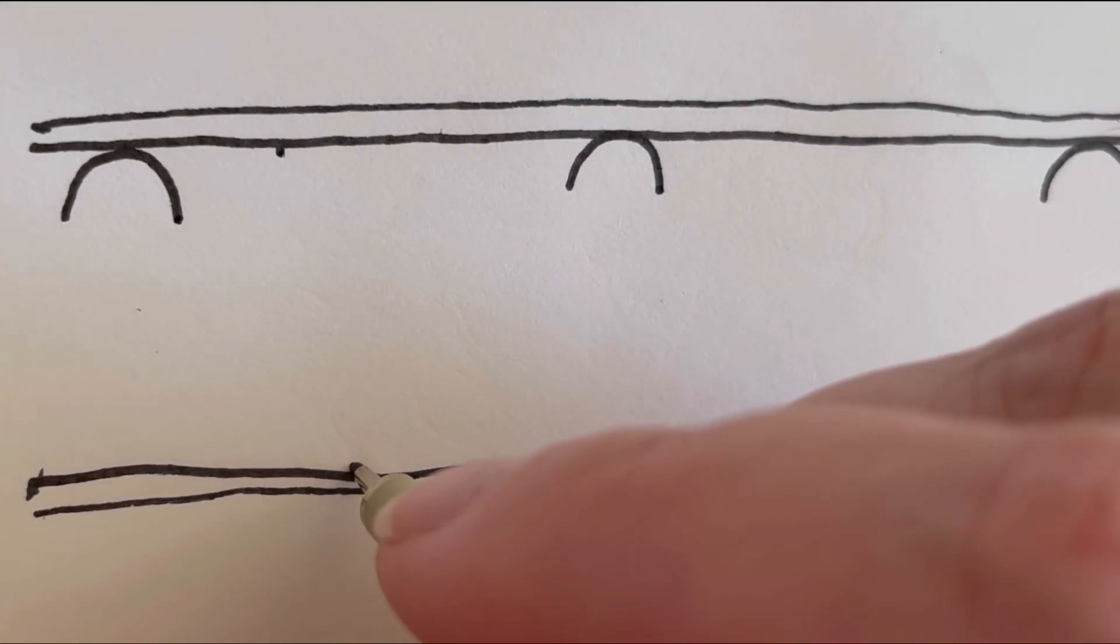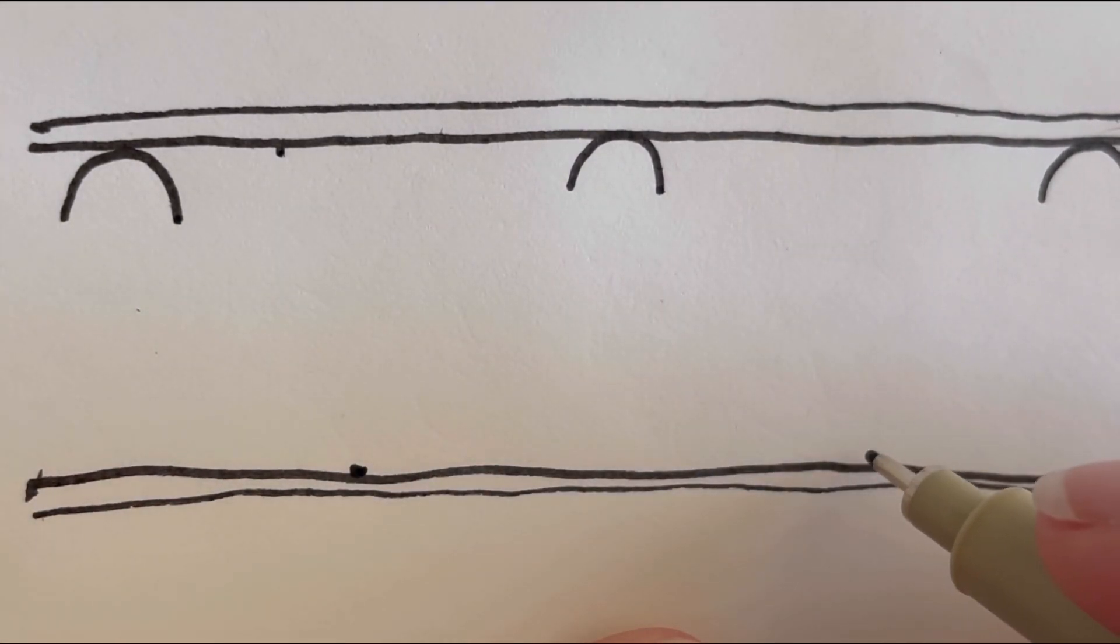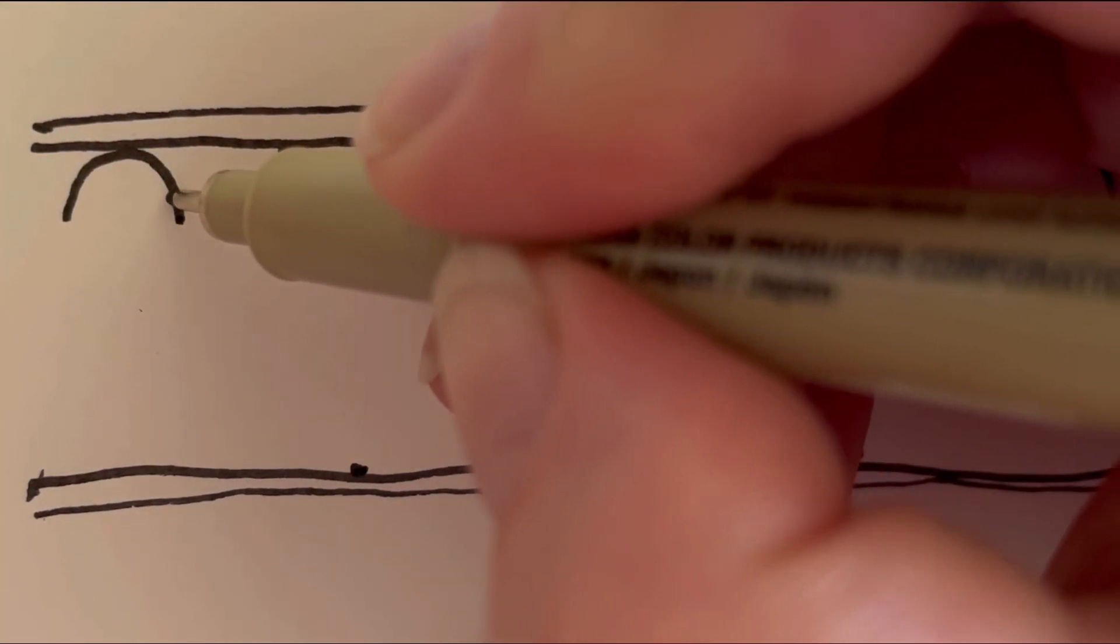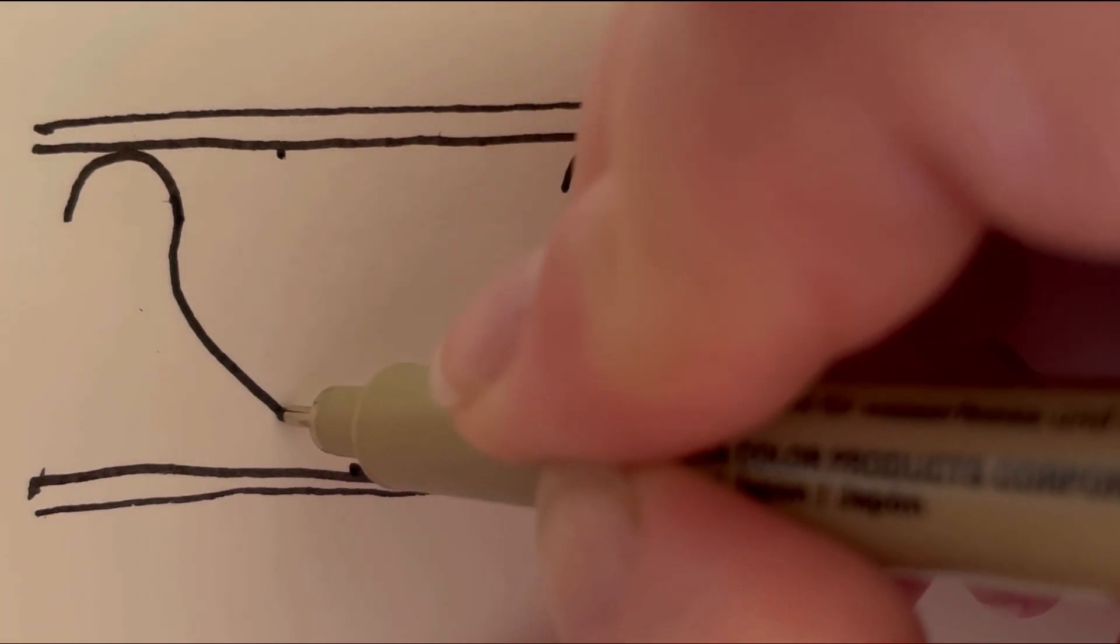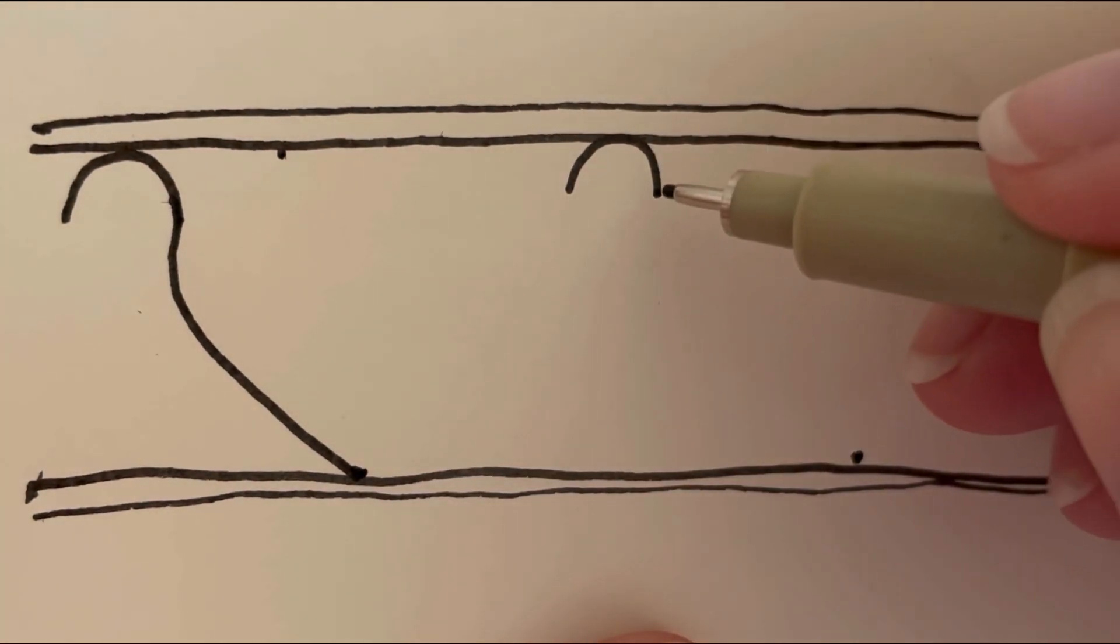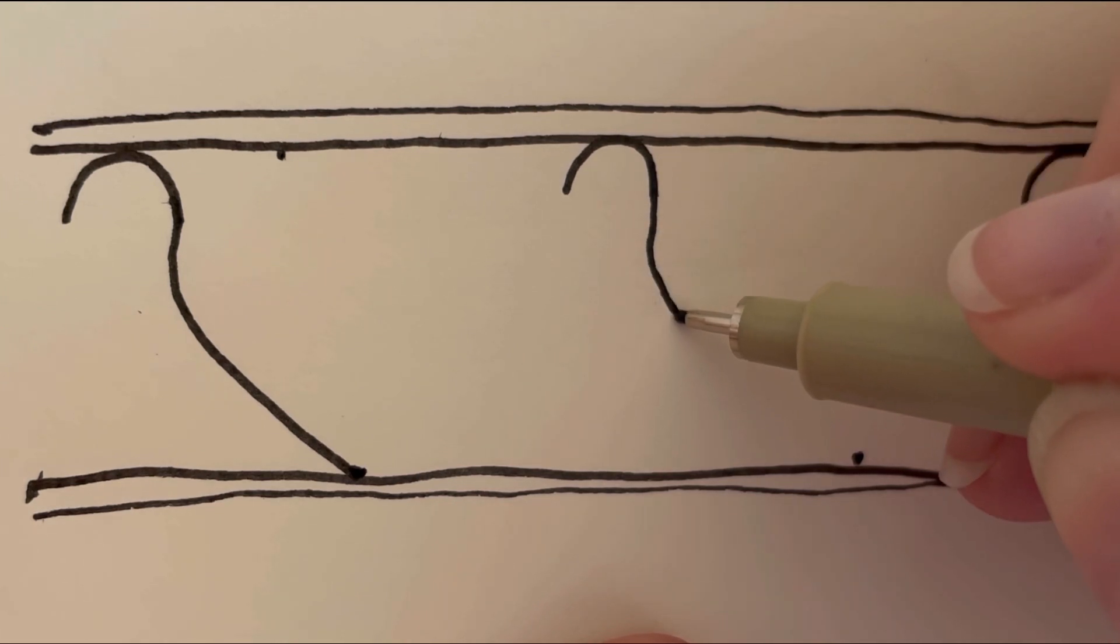Now make a dot about halfway between them on the bottom line, that being the top line of the bottom pair. Join the semicircle to the dot with a curved line going in and then out to the dot on the other side of the semicircle, making little vuvuzelas.